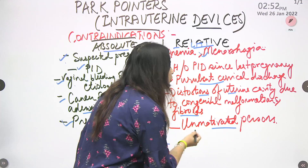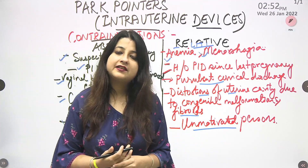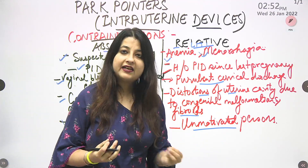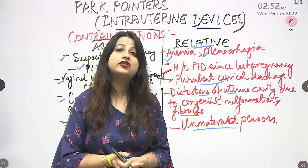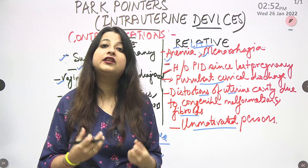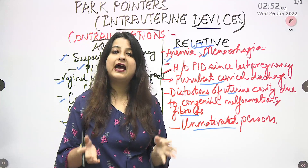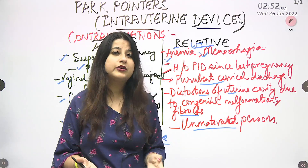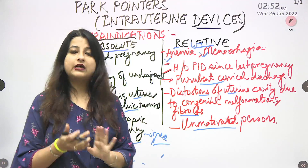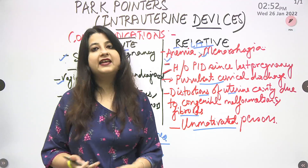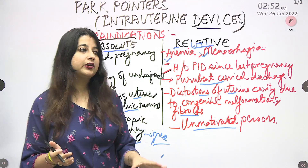Why is an unmotivated person a relative contraindication? Because every time a woman gets an intrauterine device inserted, she has to feel for the thread to know whether the IUD is still in place. So if she is unmotivated and not willing to check for the thread, we should avoid putting an intrauterine device in her. I hope that by comparing absolute and relative contraindications this way, you will remember this topic — it is one of the most commonly asked topics in examinations.